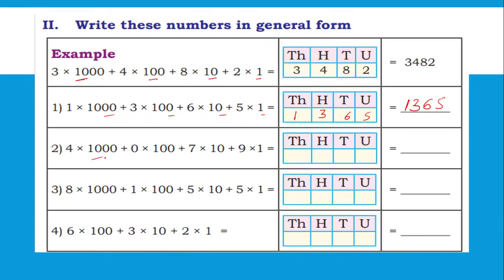Next, second one: 1000s — 4, 100s — 0, 10s — 7, Units — 9. This is 4,079. 1000s — 8, 100s — 1, 10s — 5, Units — 5. This is 8,155.